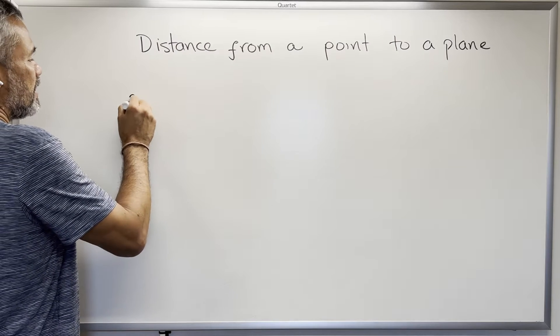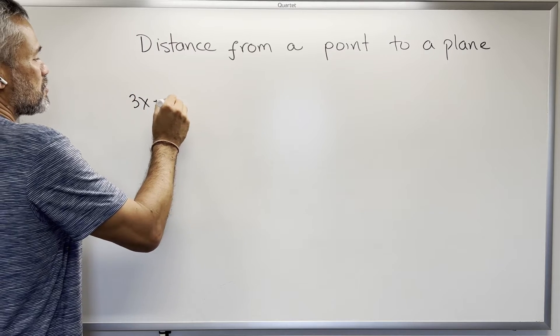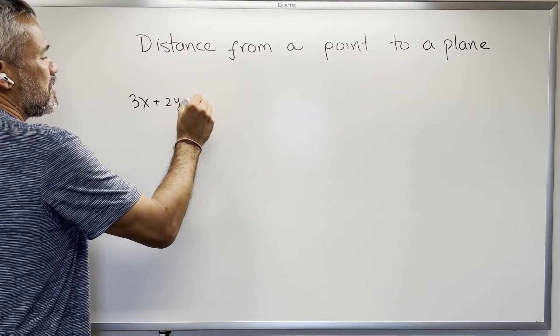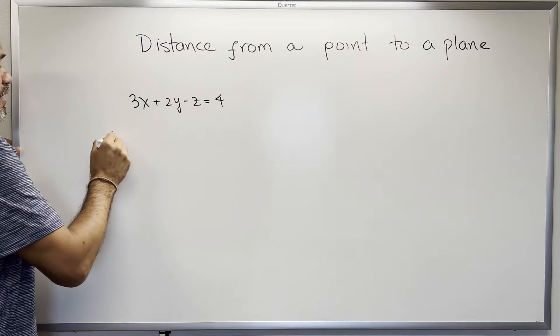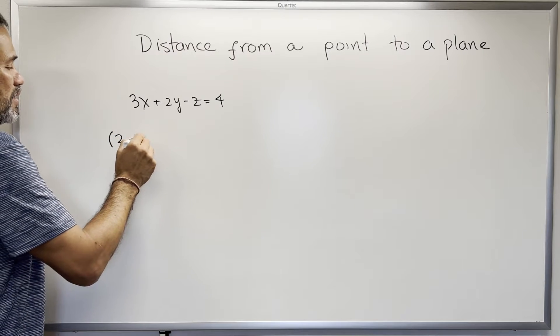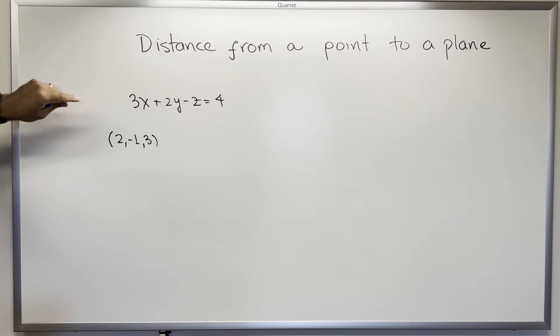Okay, if we have a plane like 3x plus 2y minus z equal to 4, and we have a point like (2, negative 1, 3), and we want to find the distance from this point to that plane...